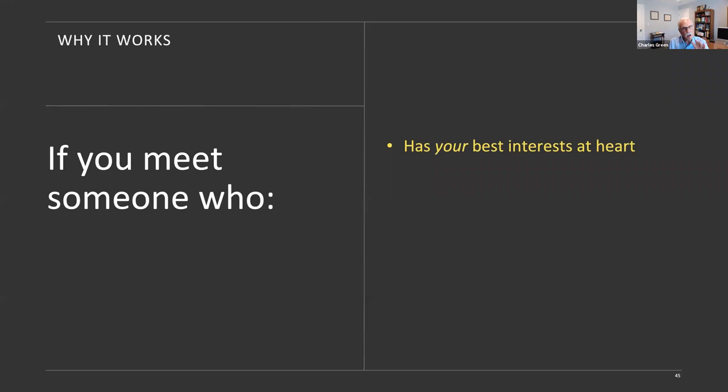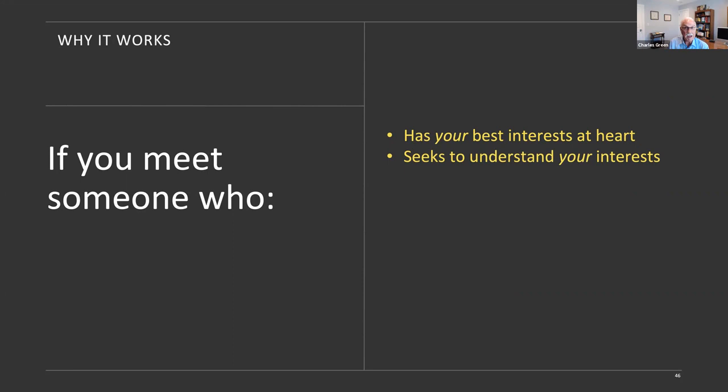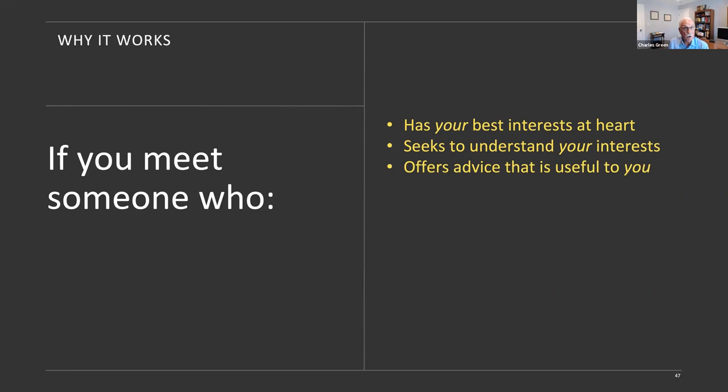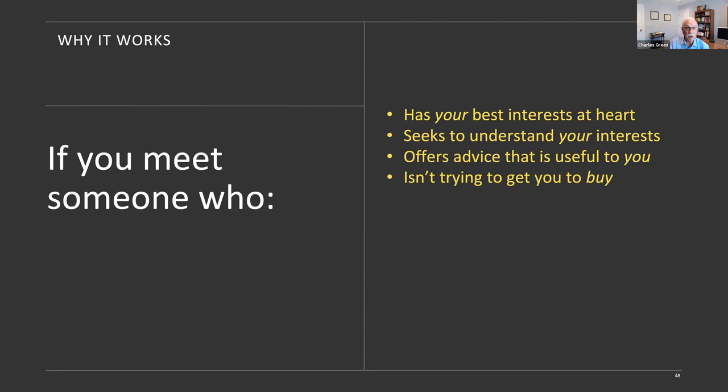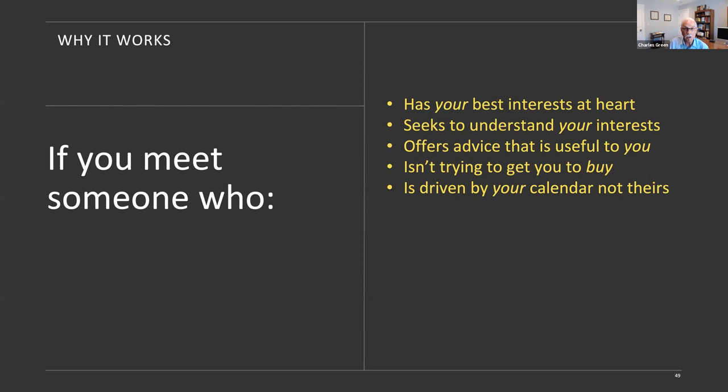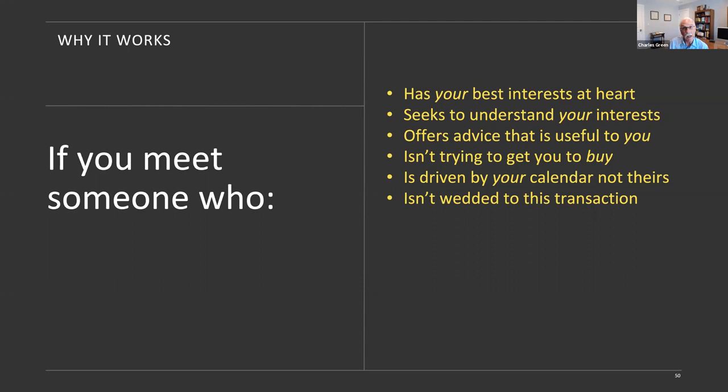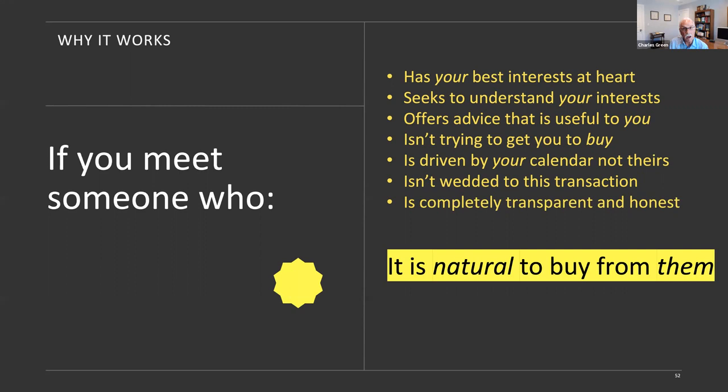Think about it this way. If you met somebody in a sales context and you were the customer and you found somebody who has your best interests at heart and who is actually seeking to understand your interests, not to try and sell you, but to understand your interests, who is able to offer advice that is useful to you, who is not trying to get you to buy. That's not what they're about. Someone who is driven by your calendar and not theirs. In other words, they're not operating off I've got to close these people by the end of the quarter. Who is not wedded to this transaction. They're not here to make this deal happen. And they're completely transparent and honest. Well why would you not buy from these people? It is natural to buy from them. These are the people you want to buy from. Your best interests at heart, honest, understanding your interests, no time pressure, not wedded to the transaction. Guess what?